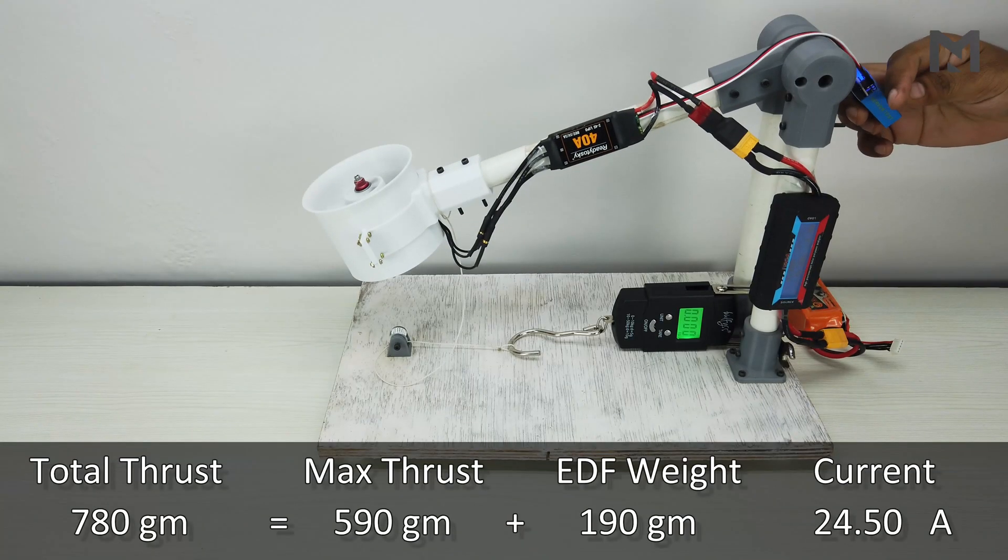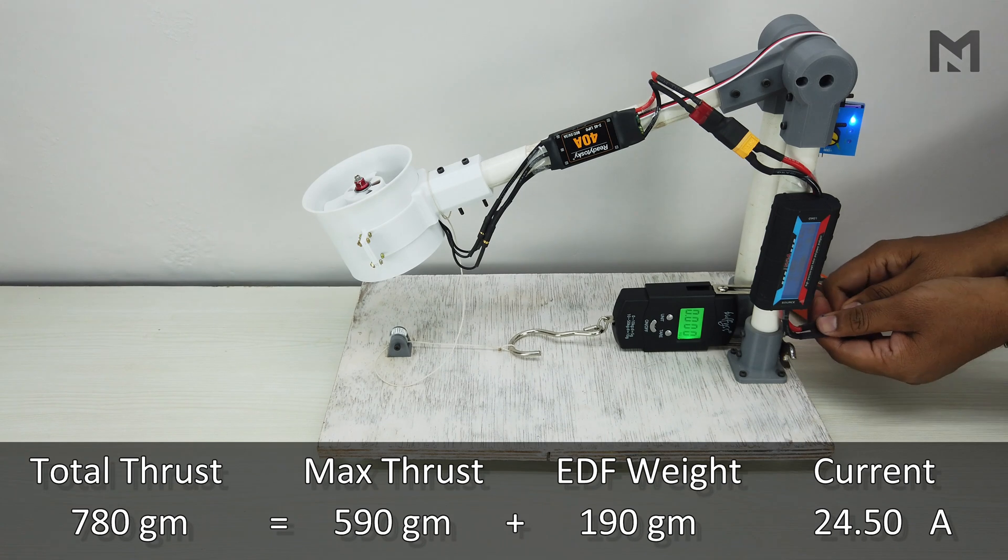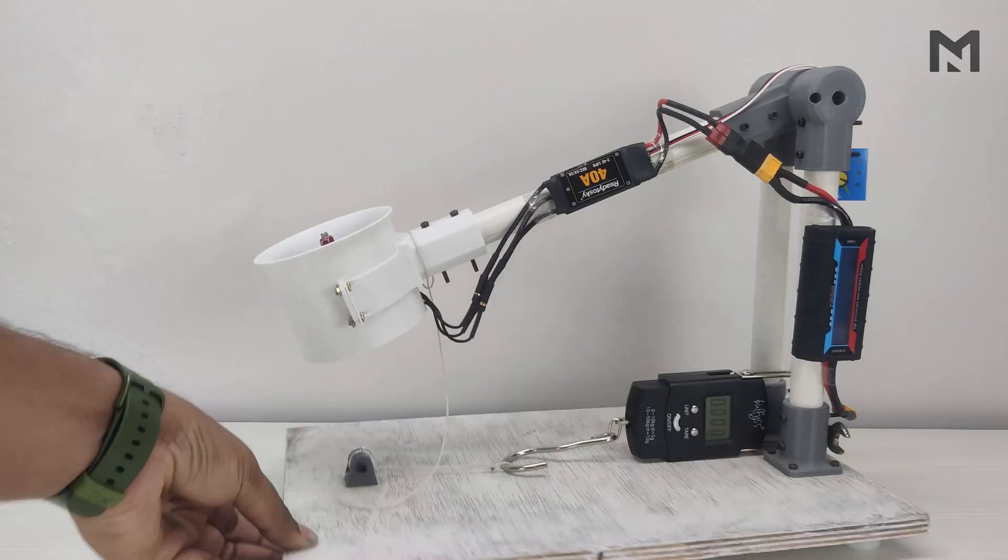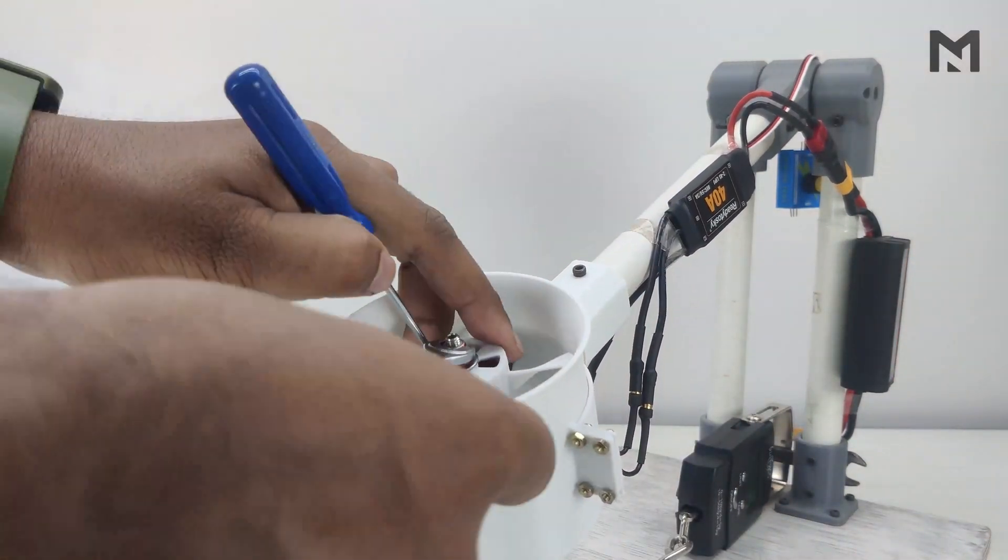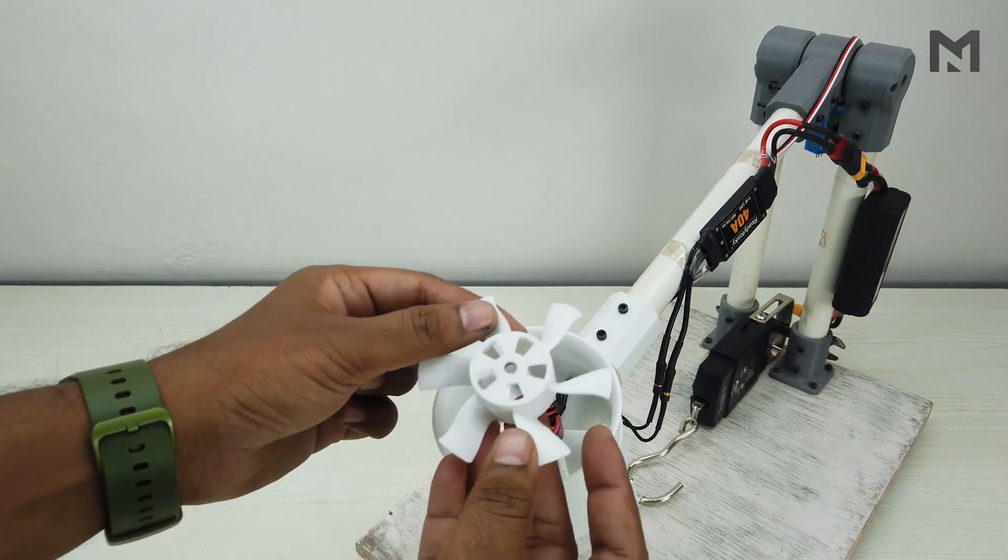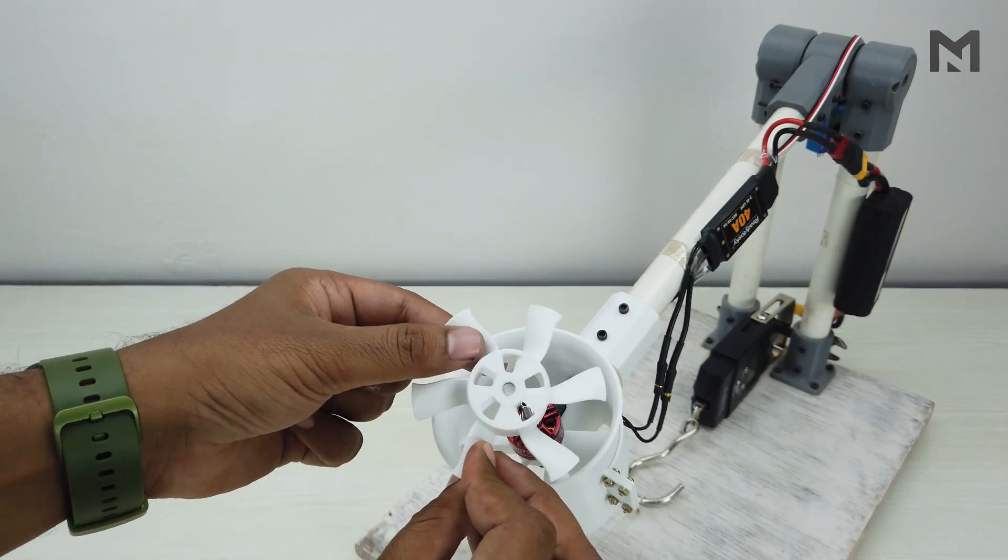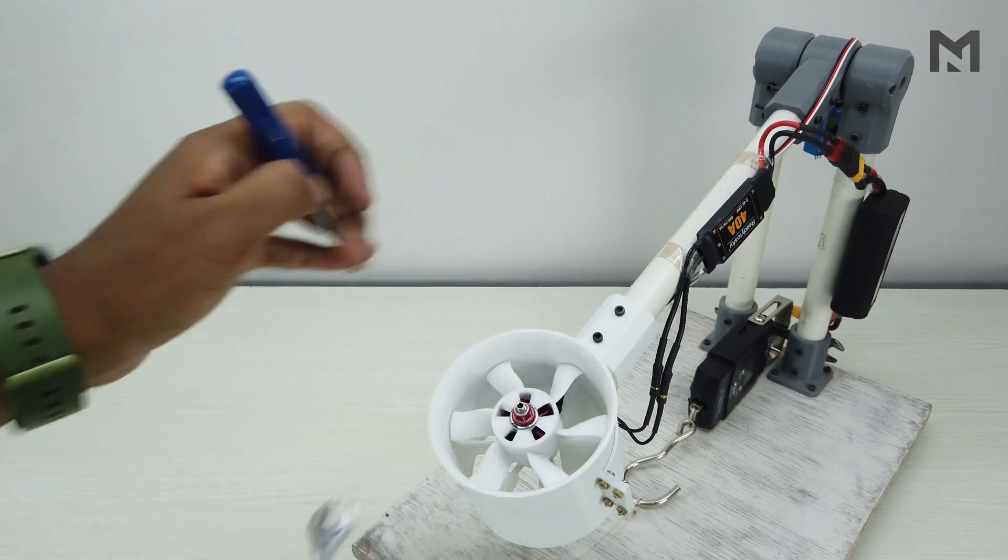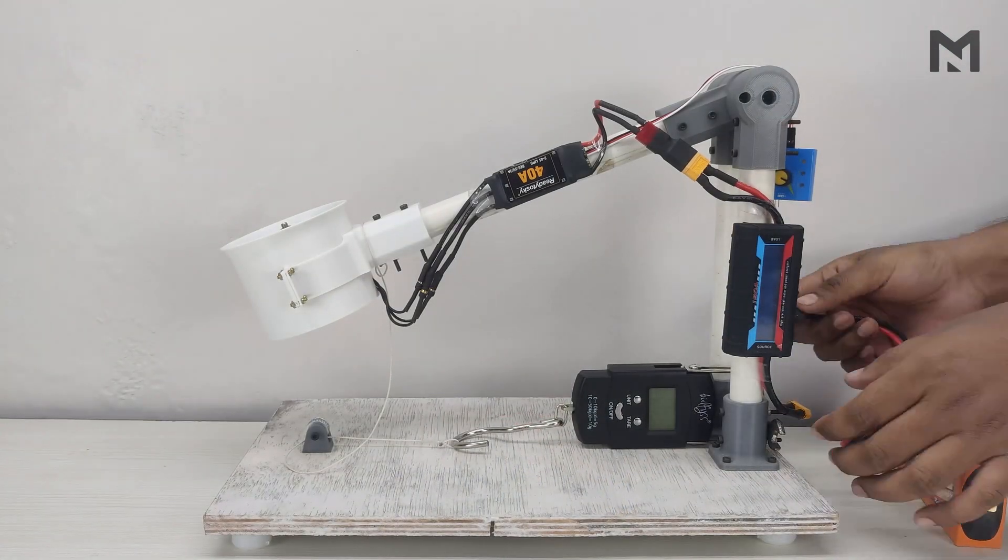We got a total thrust of 780 grams at 24.50 Amperes. Now I will replace this propeller with a 6 bladed one. This is the 6 bladed propeller that I am going to use. Mount it on the EDF. Now connect the battery and start the throttle.